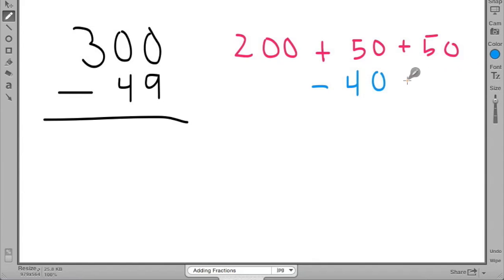This time, I'm choosing 50 and 50 with my 200. Even though I'm going to get different partial differences, when I add them all up, I will still get the same answer.